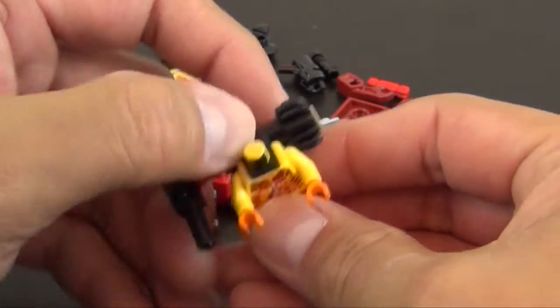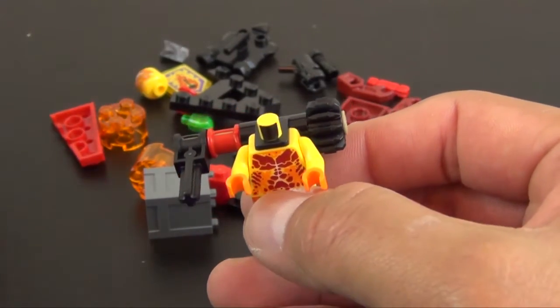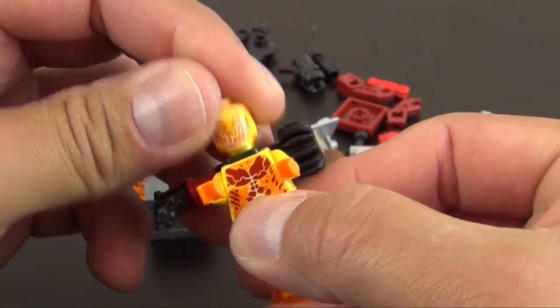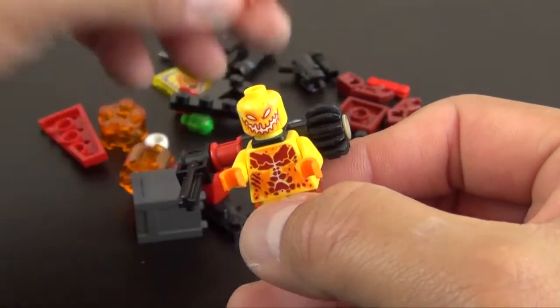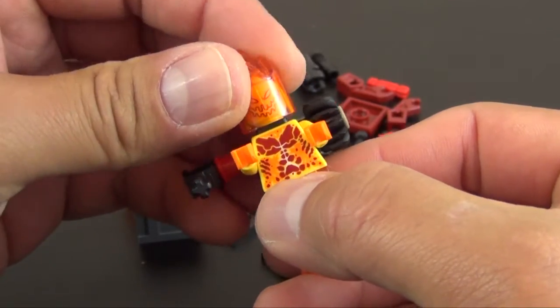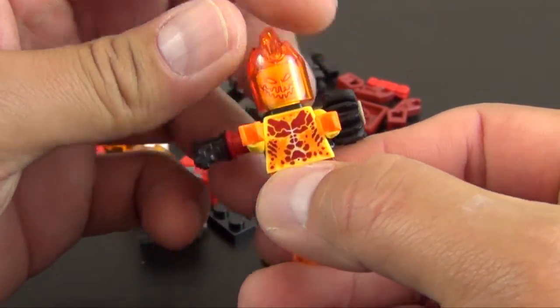We'll just slide that right over the torso neck bracket. We put the creepy flaming head on there. Then it's got this really cool flame piece that goes right over the minifigure head.